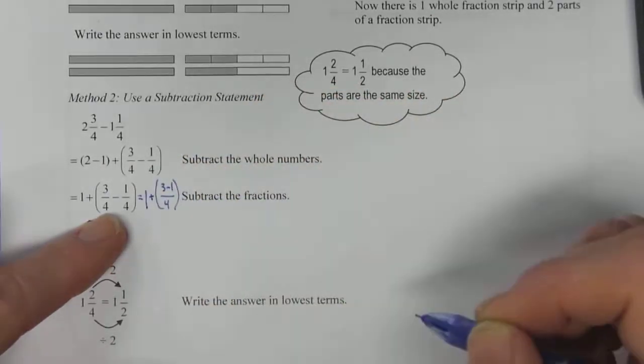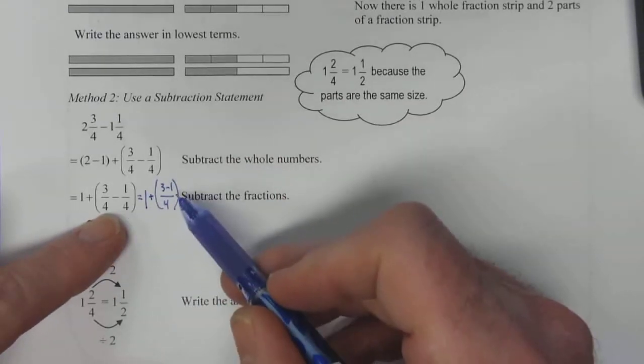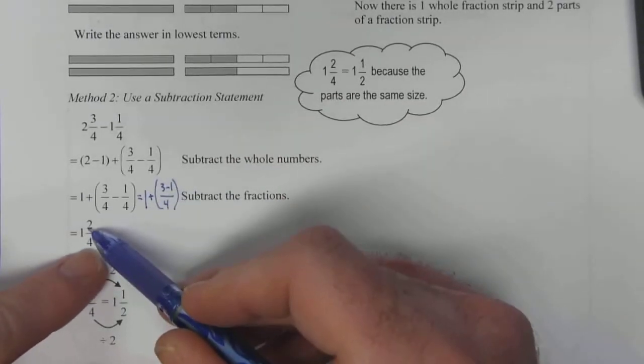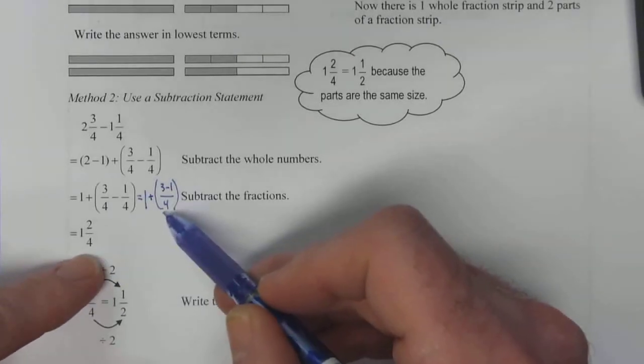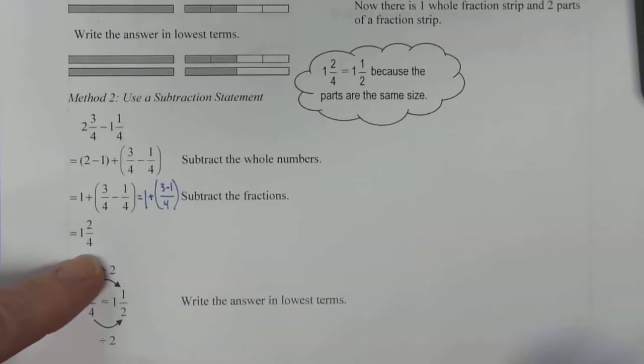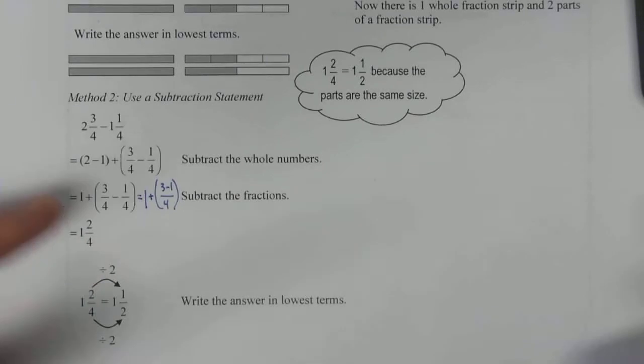We can do that because we have a common denominator. And then we know that three minus one is two. The denominator stays the same at four and we've got the whole number in front. So that's basically how that works. It's not too terribly challenging.